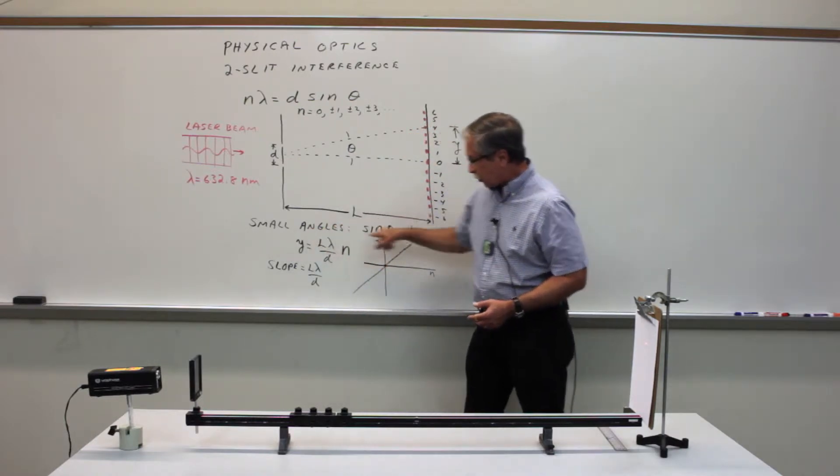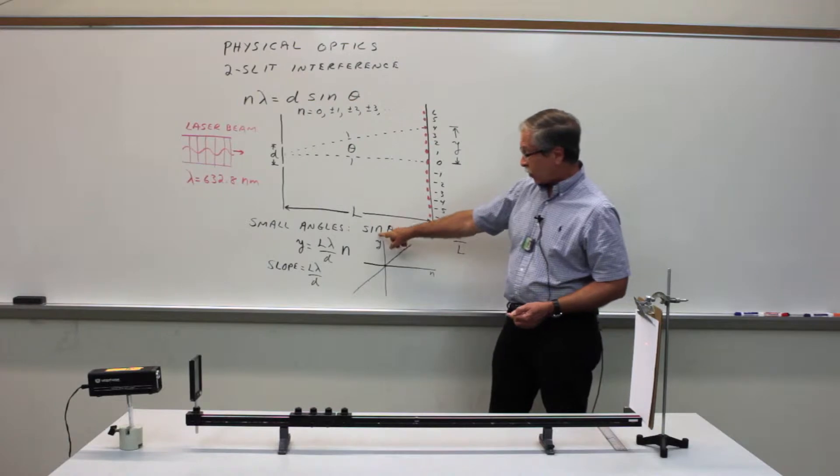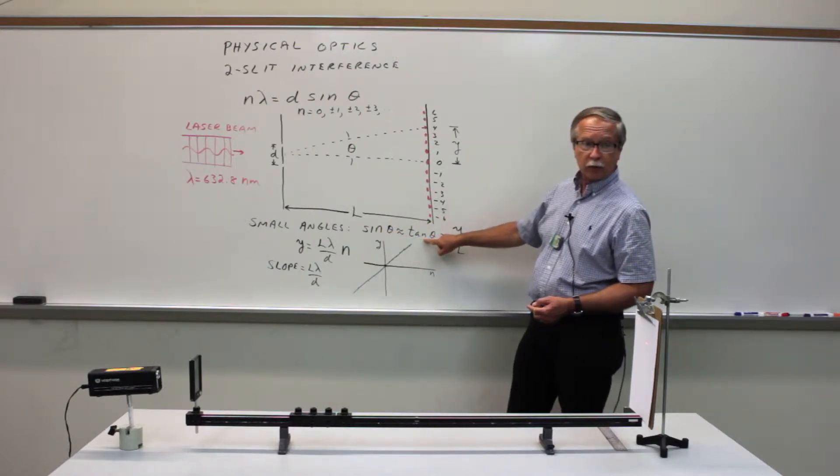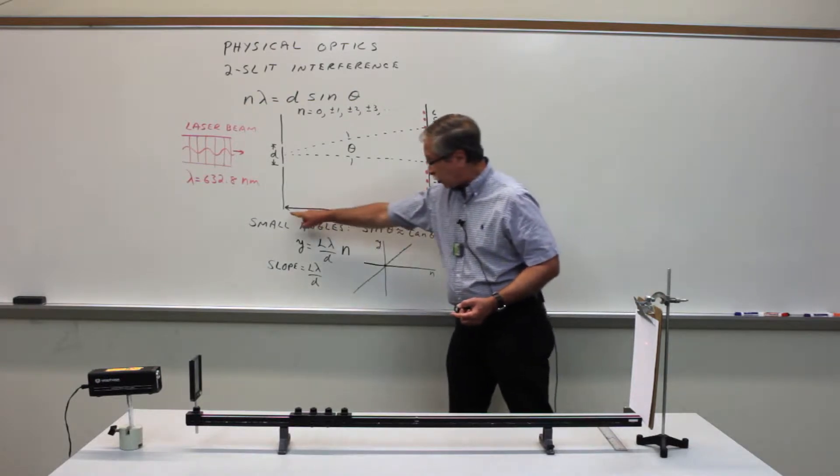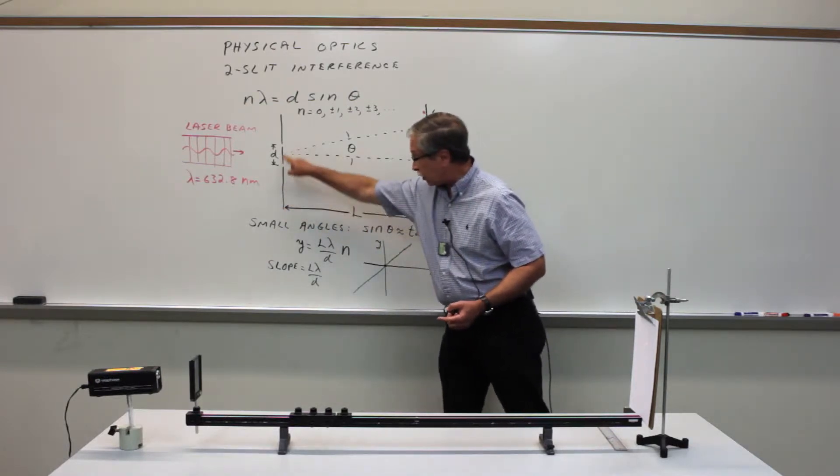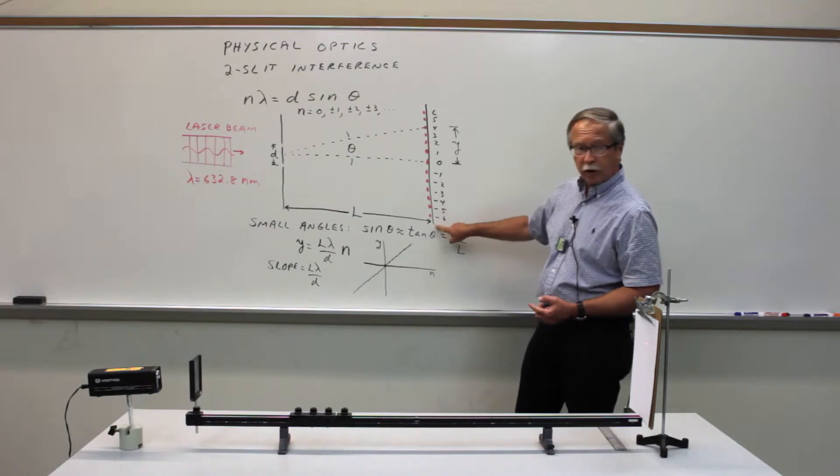we can use the small angle approximation, where the sine of theta is approximately equal to the tangent of theta, and then all you need to do is carefully measure the distance L from the slits to the observation screen,